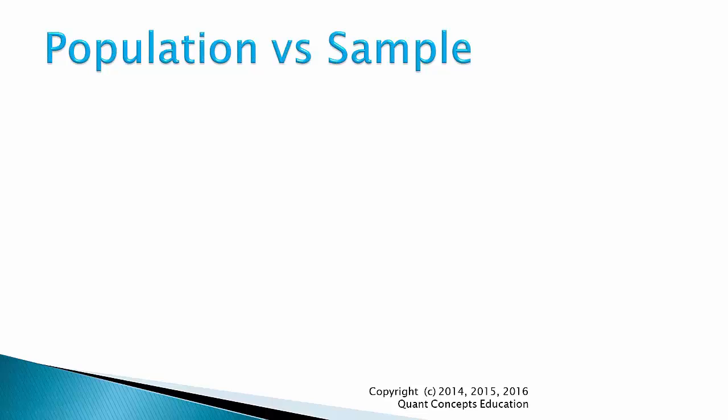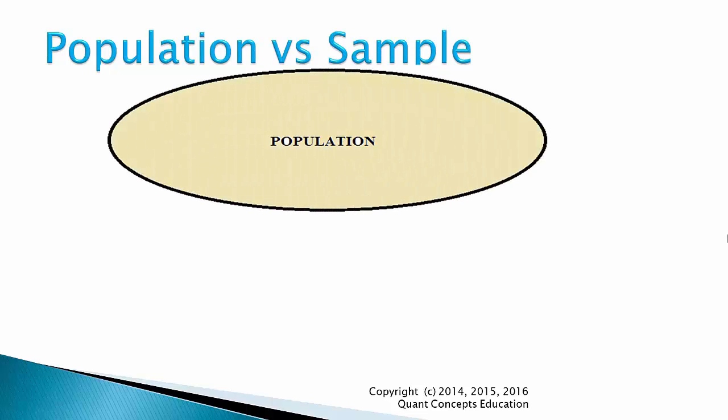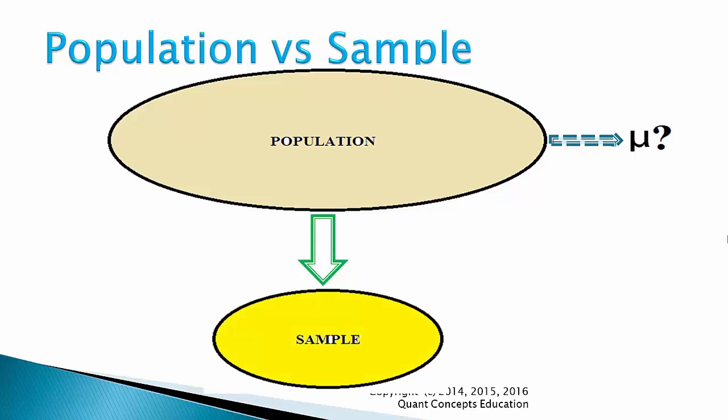Recall from hypothesis testing that we had a population that is infinitely large, and we were interested in the population mean. However, the population mean was not observable, as we could not observe the entire population. So what did we do? Well, we took a random sample from the population and calculated the sample mean.